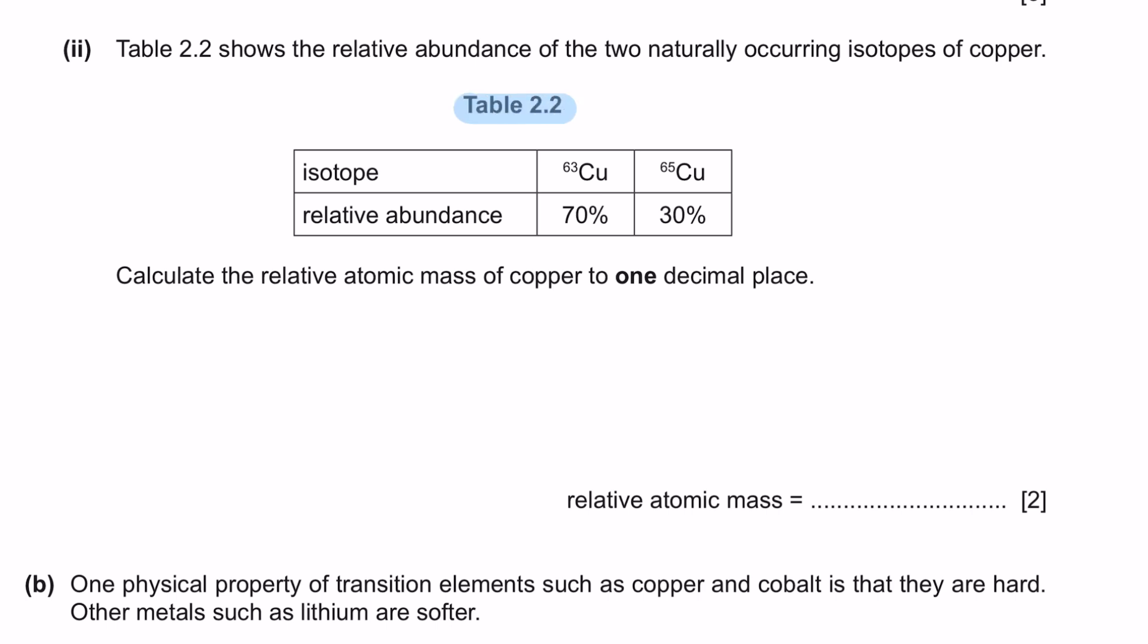Next, question part 2. Table 2.2 shows the relative abundance of the two naturally occurring isotopes of copper. Calculate the relative atomic mass of copper to one decimal place. Calculating the relative atomic mass from relative abundance is very simple. We're going to take the percentage of each isotope, multiply it with the nucleon number and divide by 100%. Solve this in your calculator and you will get 63.6. They want one decimal place, so this answer is your final answer.